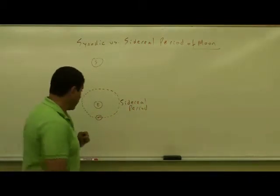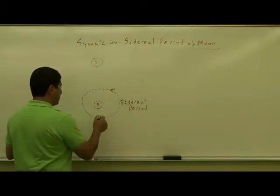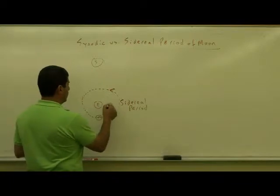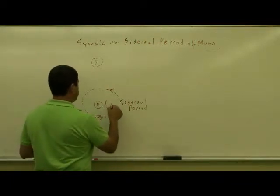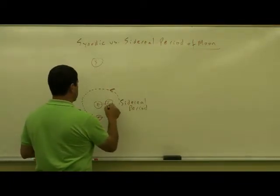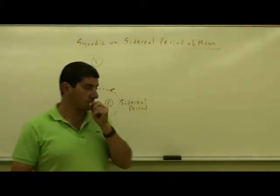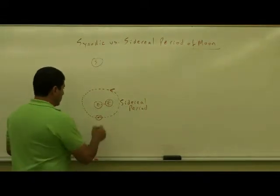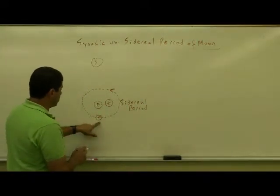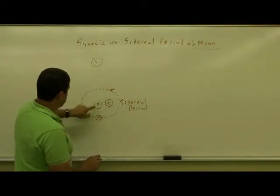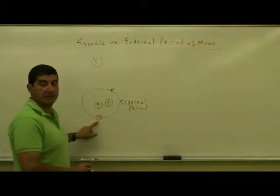Now at the same time that the Moon is going around that way, the Earth is now a little bit ahead, right? Because the Earth is not stationary. Within the 27 days, the Earth has also moved. So if the Moon starts in this position and the Sun is here, the Earth is here, the Moon will be in full Moon.